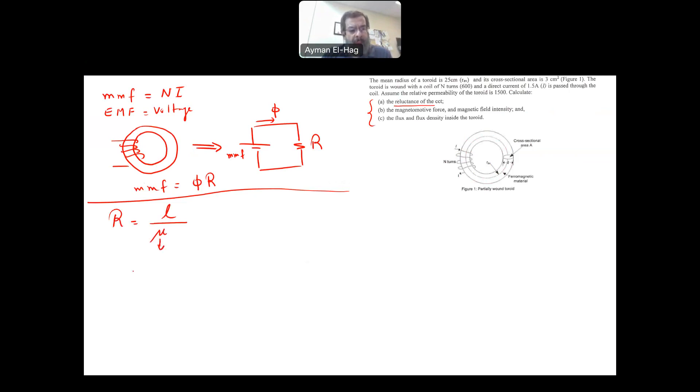L is the average path of the magnetic circuit, the flux that will go through, divided by mu, which is the permeability, which is equal to mu zero, which is a constant, times the mu R, which is the relative permeability, times the cross sectional area of that magnetic material.